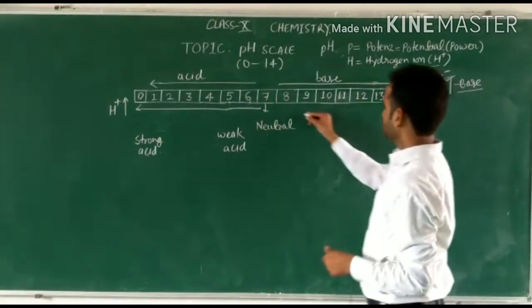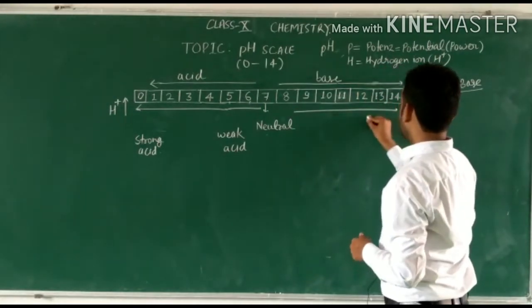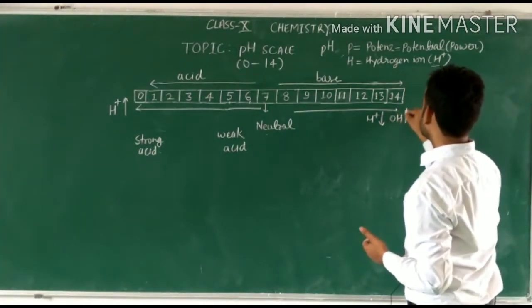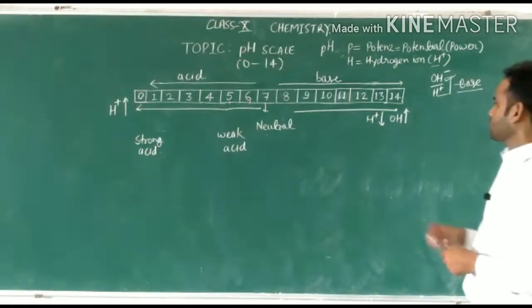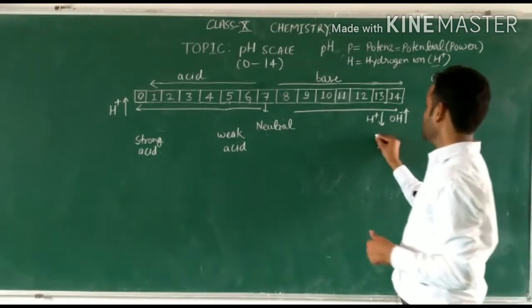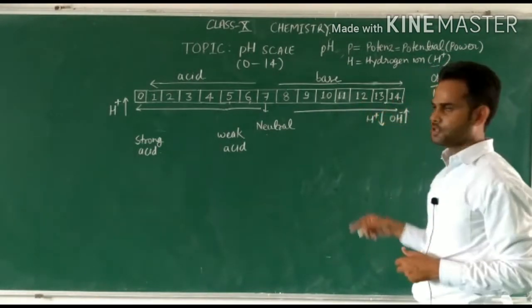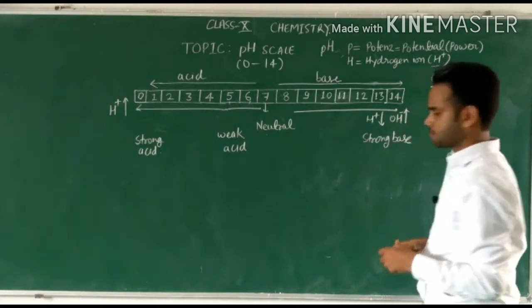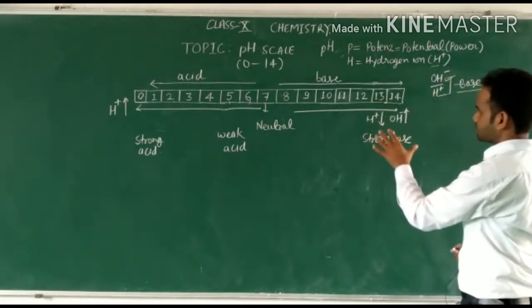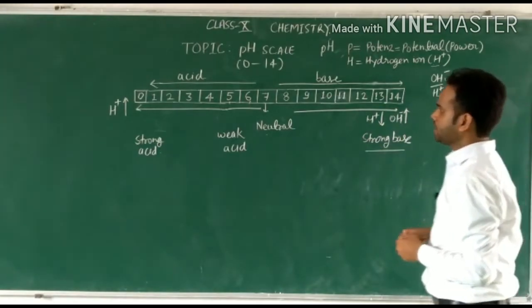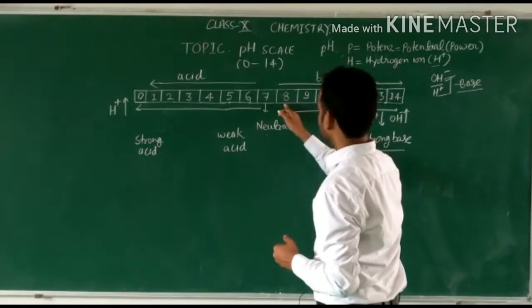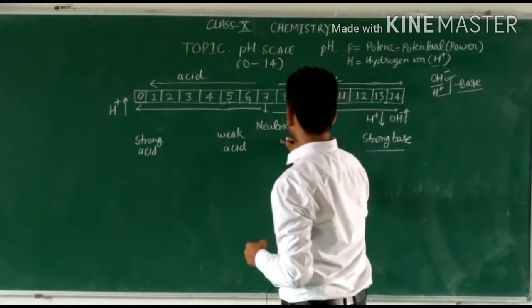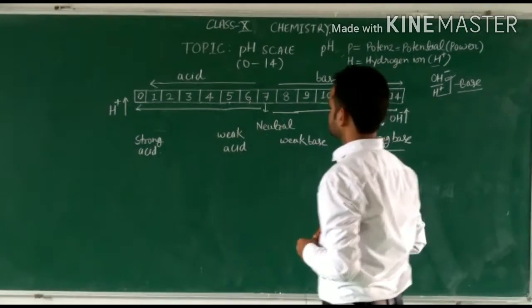The same applies in the case of base. As we go closer to 14, hydrogen ion concentration will be less, which means hydroxide ion concentration will increase. So near 14, pH values like 12 or 13 will be a strong base. If a substance has a pH value of 8 or 9, which is closer to 7, then it would be in the category of weak base.